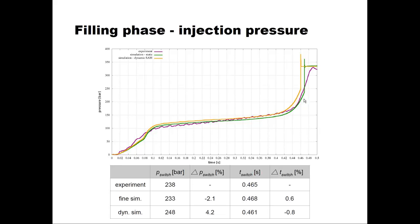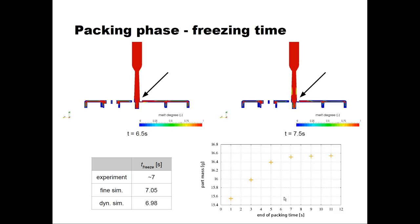What you usually compare is the pressure around switch-over, along with the experimental values and a couple of simulation results. We used a fine mesh for one simulation and a coarser mesh with a dynamic simulation that switches to a finer mesh for the packing phase. The quality of the pressure results is rather good — the deviation at switch-over is two to four percent, and the point in time when we switch from the filling phase to the packing phase is also captured very well.